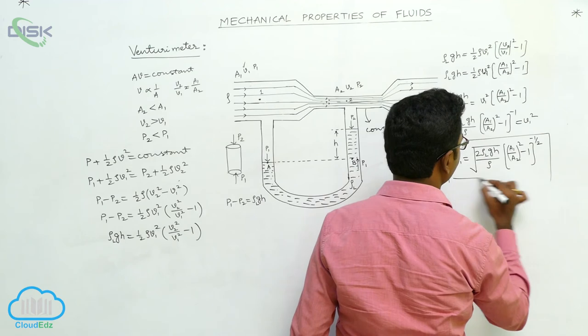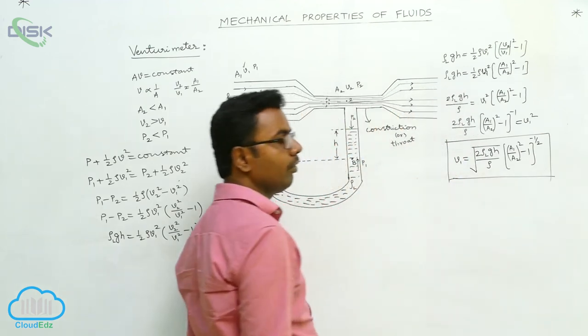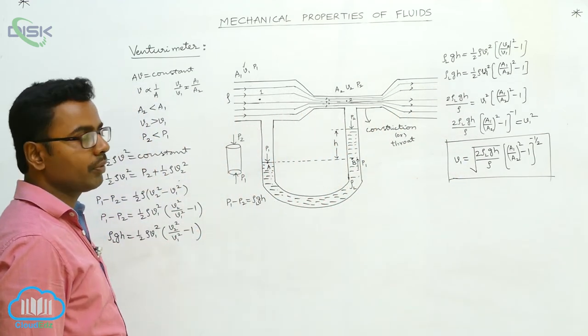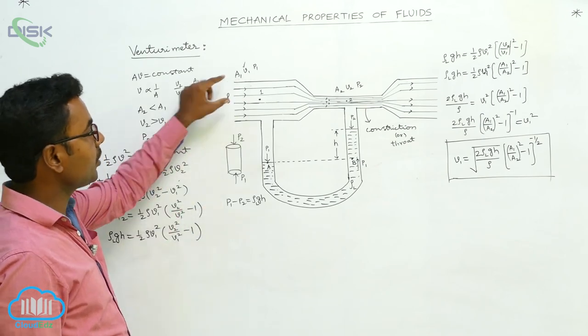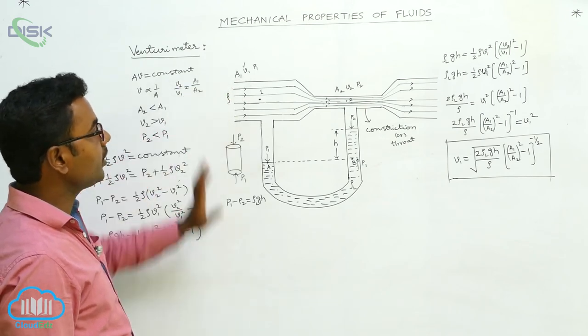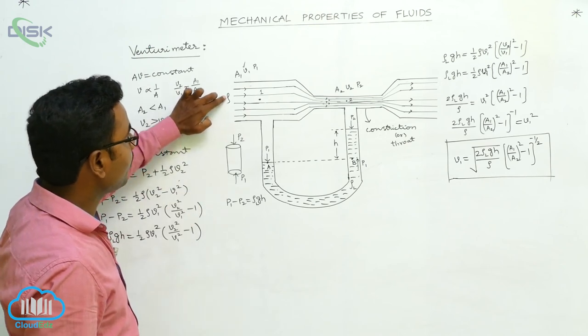Using this equation we find the velocity of fluid flow using the venturimeter. Here V1 is the velocity of fluid flow here in this cross section in this tube.